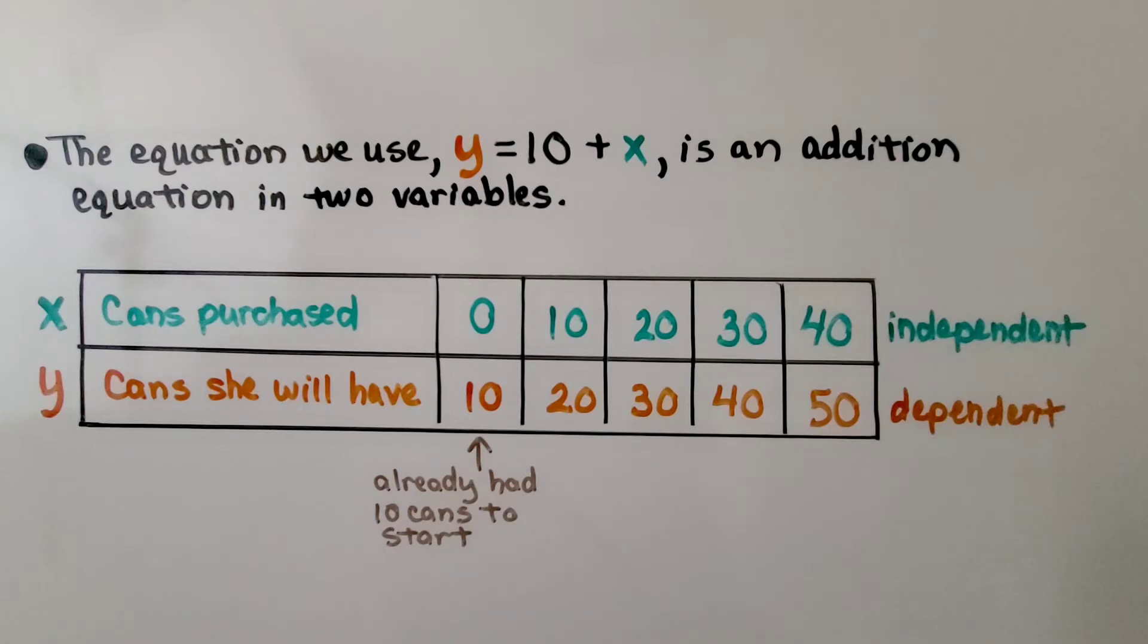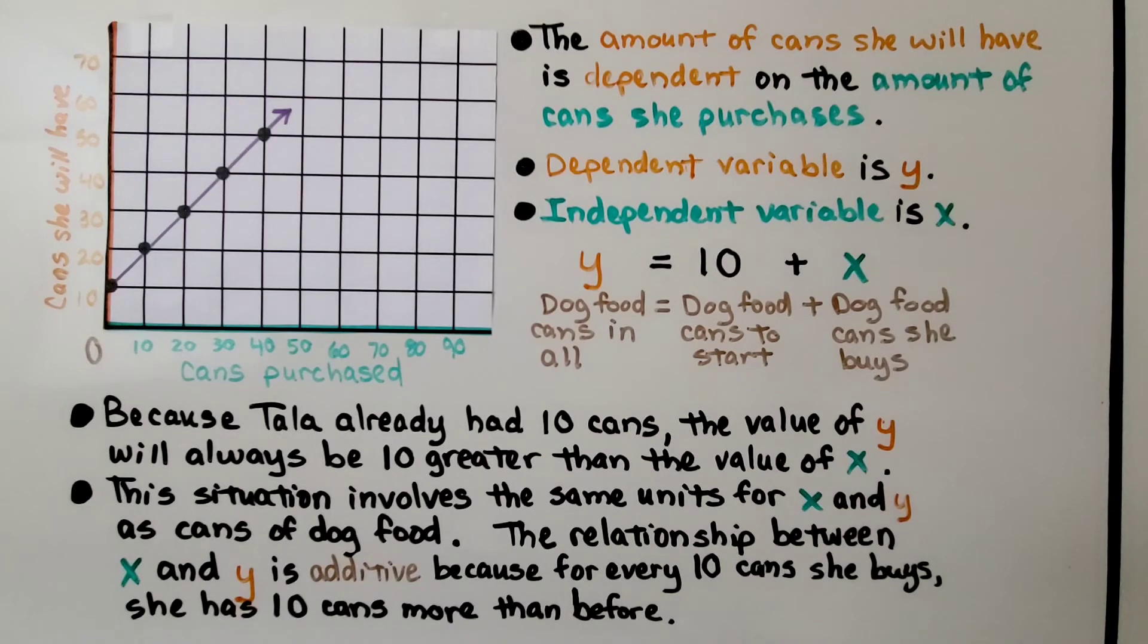y is the dependent variable and x is the independent variable. Now, be careful because y won't be the dependent variable every single time in every single problem. It just usually is the dependent and x is usually the independent variable.